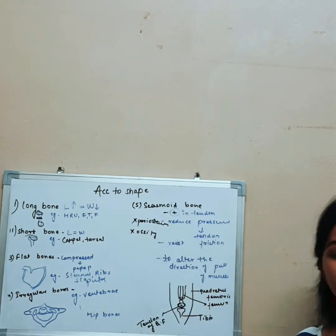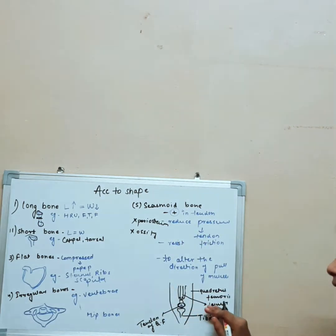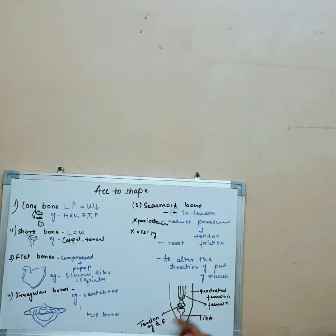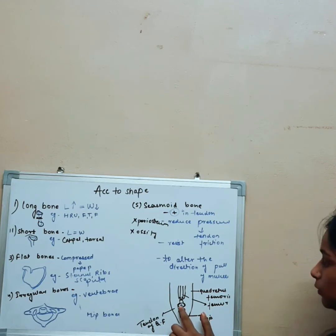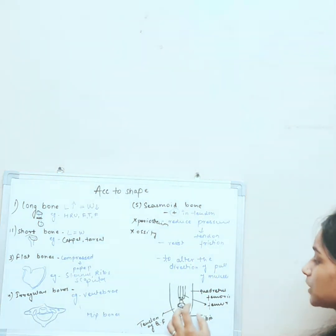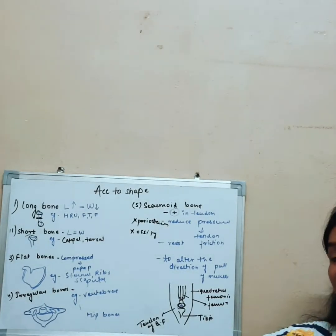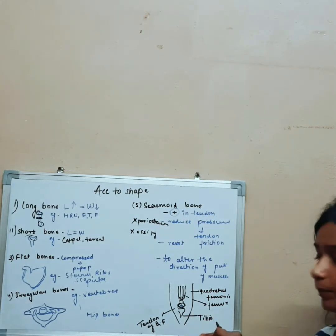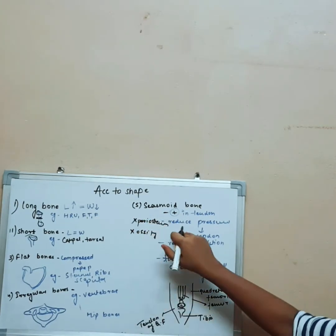Last but not least is the sesamoid bone. Sesamoid bones are present within tendons. Why are sesamoid bones present inside the tendon? Because our thigh muscle, the quadriceps femoris, has so much power that it can sometimes fracture the tibia. So for managing and reducing the pressure, the sesamoid bone is present inside the tendon.